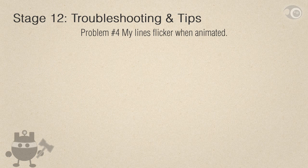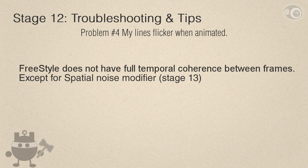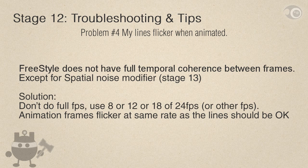Problem number 4: my lines flicker when they're animated. If your intention is to make flickery lines like a few of the line styles presented in stage 7, you can skip this one. Otherwise pay attention. Lines flicker because Freestyle doesn't have full temporal coherence between frames. But there is one line style modifier that has temporal coherence — that's the spatial noise modifier, which will be explained in stage 13. To solve flickering lines, don't use full frames per second. Use 8, 12, or 18 of the 24 frames per second. If the animation frames flicker at the same rate as the lines, the overall result will be okay, just like hand drawn animation.